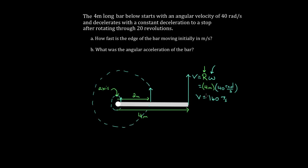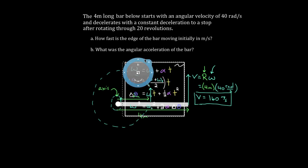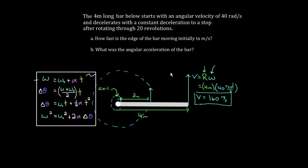That answers part A: 160 meters per second. Part B asks for the angular acceleration. We'll use a kinematic formula. We know omega-initial is 40 radians per second, and the bar rotated 20 revolutions — converting to radians: 20 times two pi equals 40 pi radians for delta-theta. We have to keep units consistent since omega is in radians per second.